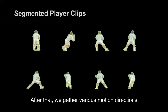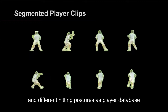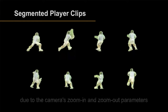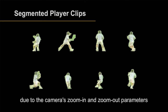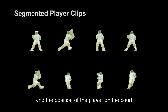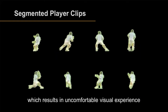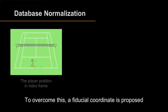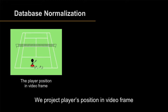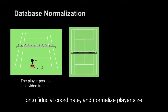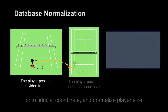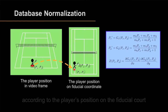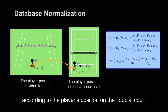After that, we gather various motion directions and different hitting postures into a player database. The size of each player is different due to the camera's zoom-in and zoom-out parameters and the position of the player on the court, which results in an uncomfortable visual experience. To overcome this, the fiducial coordinate is proposed. We project the player's position in the video frame onto the fiducial coordinate and normalize player size by calculating the partial differences to get the magnification ratio according to the player's position on the fiducial court.